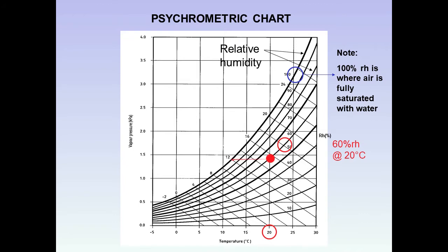We then extend from that mark horizontally to the 100% line — that is where the air is fully saturated with water and can no longer retain the water present. We then drop a vertical line down to the base. This tells us that the air is saturated at 12 degrees.